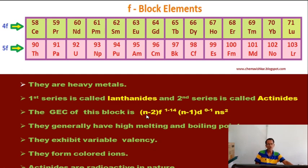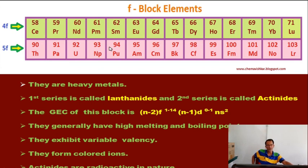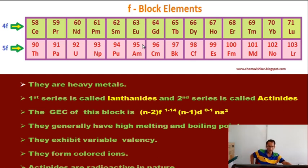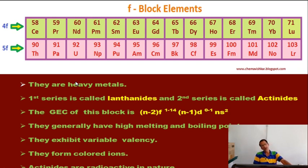The last electrons of F-block elements enter into (n-2)F sub-shells. They have high melting and boiling points. They exhibit variable valency and variable oxidation states like transition metals, and produce colored compounds. Actinides are radioactive in nature — almost all actinides are radioactive. Lanthanides and actinides are more reactive and heavier compared to transition metals. These are the important characteristics of S-block, P-block, D-block, and F-block elements.